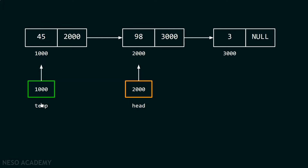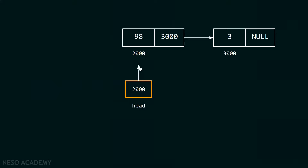The temp pointer is required because we want to free the memory for this node. There is a requirement of some pointer which must point to this node so that we can delete it. So, temp is required for that purpose. After deleting this node, the resultant linked list looks like this.